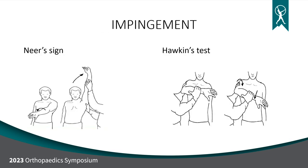Special signs: the Neer sign — you start the patient in a lowered position and lift their arm up. If they reproduce pain, it's a good sign of bursal inflammation or rotator cuff impingement. The Hawkins test applies a downward force with internal rotation — also a good sign of rotator cuff pathology. These two tests are not isolated to impingement; if someone has a partial or full thickness tear, these signs will also be positive.